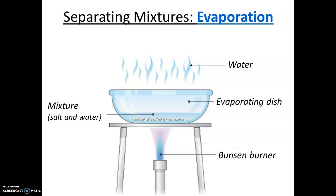In labs, evaporation is done using a Bunsen burner. You have a tripod stand on which you keep an evaporating dish, and from below you provide heat with the Bunsen burner. A mixture of salt and water is placed there. Water at 100 degrees Celsius starts evaporating, and after evaporation what will be left behind is your salt. This is the method of separating salt and water through evaporation.